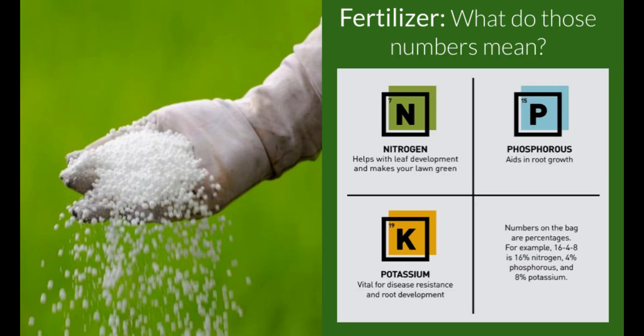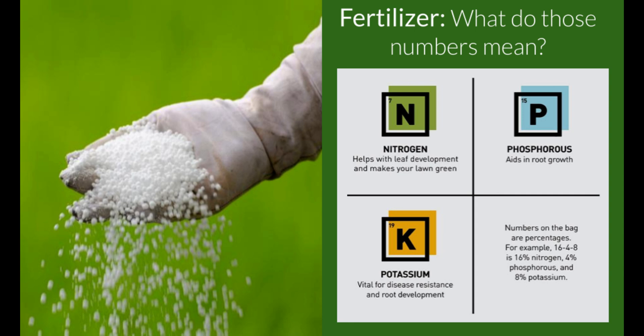They represent the three major nutrients that are in that fertilizer: nitrogen, phosphorus, potassium. This label is known as the fertilizer grade and it is the standard used throughout the United States for identifying what kind of ingredients are in a particular fertilizer. For instance, a bag that has the numbers 10-10-10 would contain 10% nitrogen, 10% phosphate, and 10% potash.